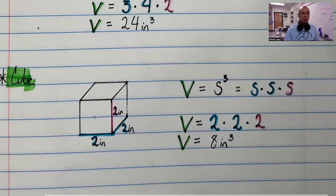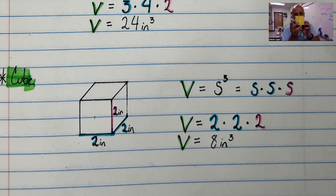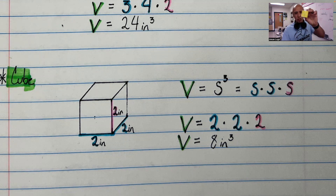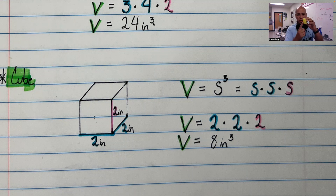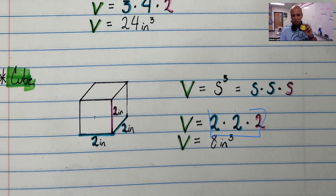In a cube, it's the exact same thing, except that a cube is made up of squares, so every single face is a square, meaning every single side will be exactly the same. Every side is 2. So while the volume formula is still length times width times height, you just say side to the third power because every variable is the same. So in this case, it would be 2 times 2 times 2 — that's why we say side to the third power. And 2 times 2 times 2 equals 8, so the answer is 8 inches cubed.